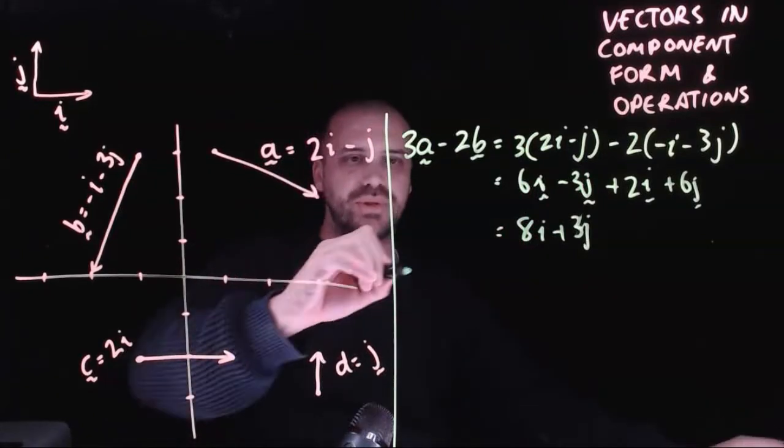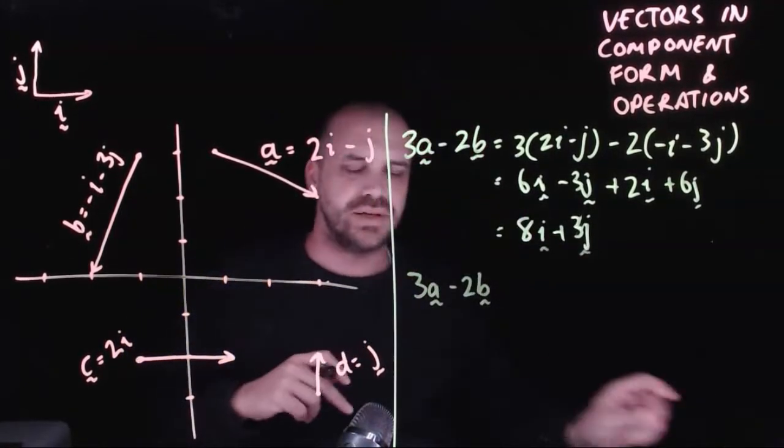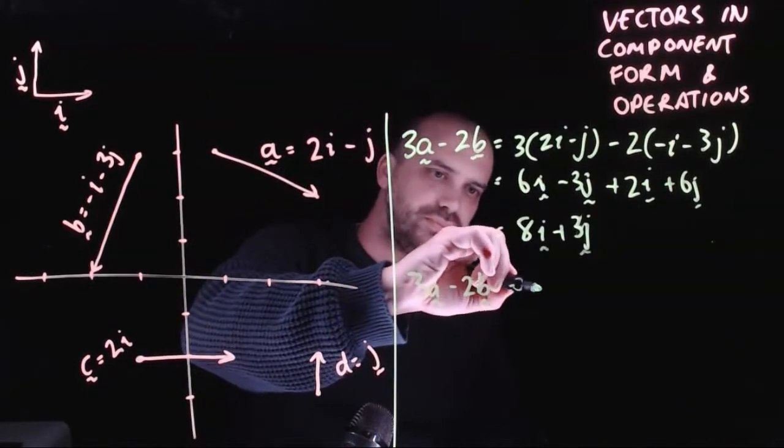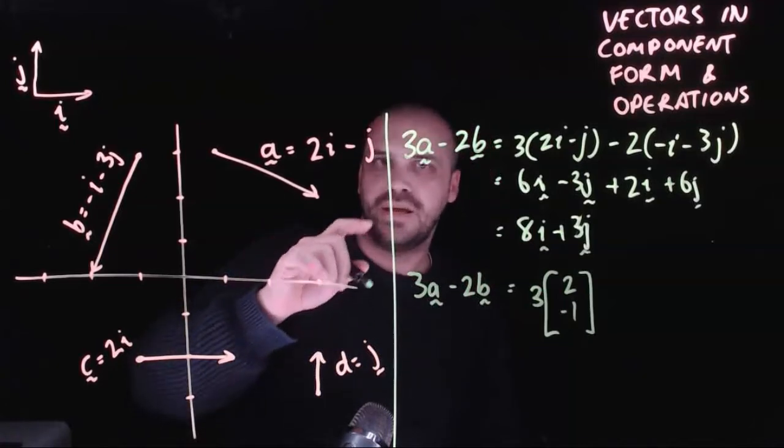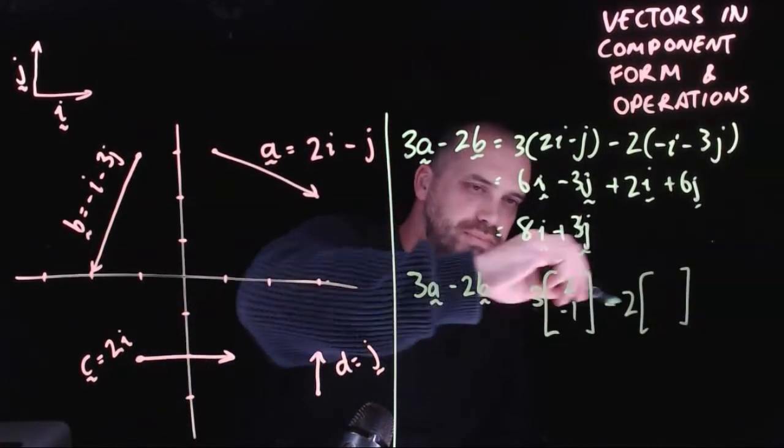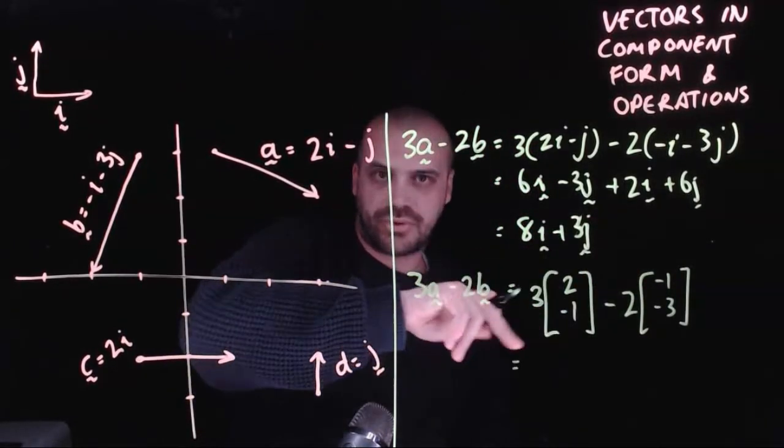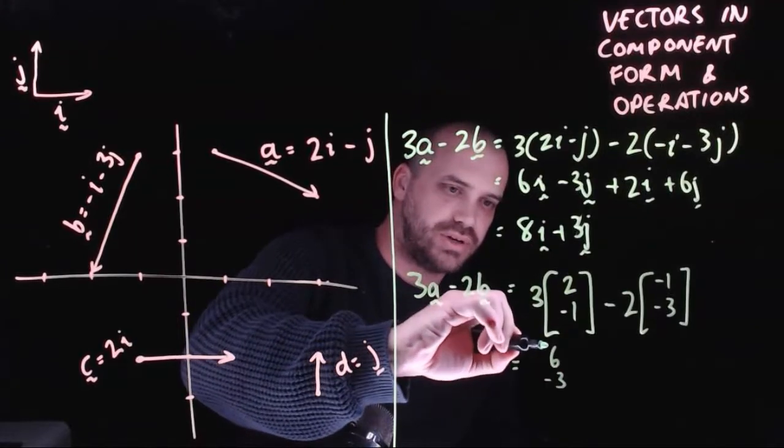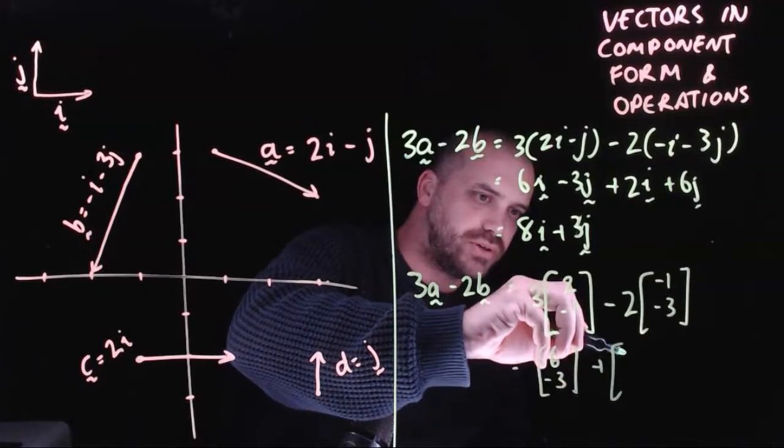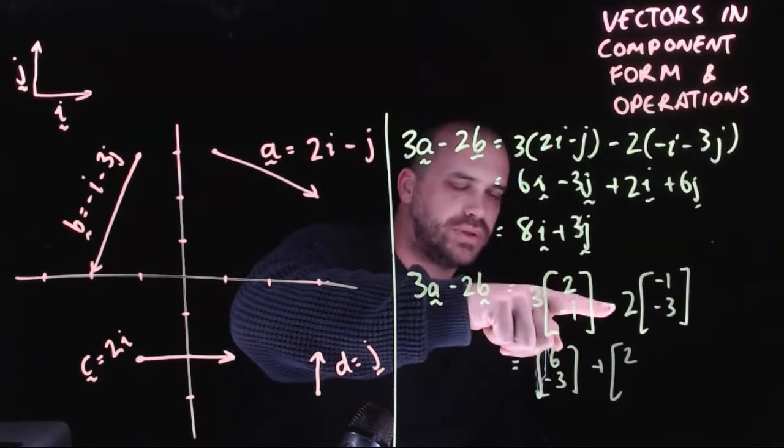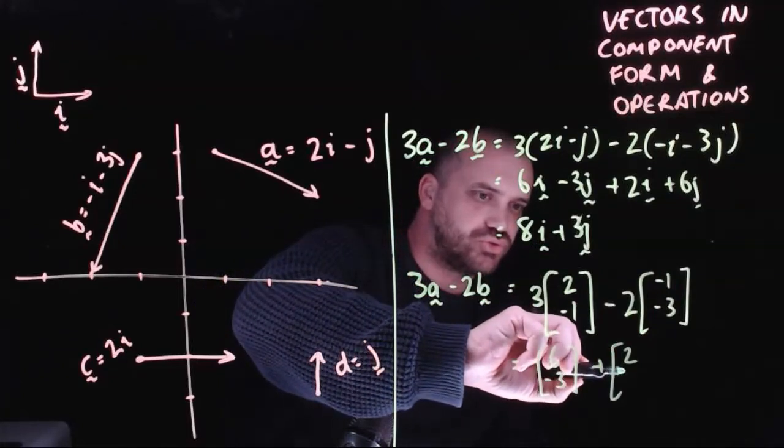Now, of course, we can do that whole thing with column vectors as well. So if we want to do 3a minus 2b, it's 3 times a, which is 2 minus 1, minus 2 times b, minus 1, minus 3. 3 times that is 6. 3 times negative 1 is negative 3. So we get 6 minus 3. And then minus 2 times minus 1 is positive 2. And negative 2 times negative 3 is positive 6.